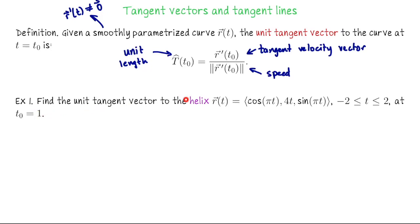Let's look at this example of a helix. Let R(t) = (cos πt, 4t, sin πt) for t values from −2 to 2. Notice this is a helix: we have cos πt in the x-coordinate, sin πt in the z-coordinate, so x and z are moving in a circular fashion, and then the y-coordinate is 4t. So as t grows we're going to travel along the positive y-axis — this is a helix spiraling around the y-axis as its central axis.